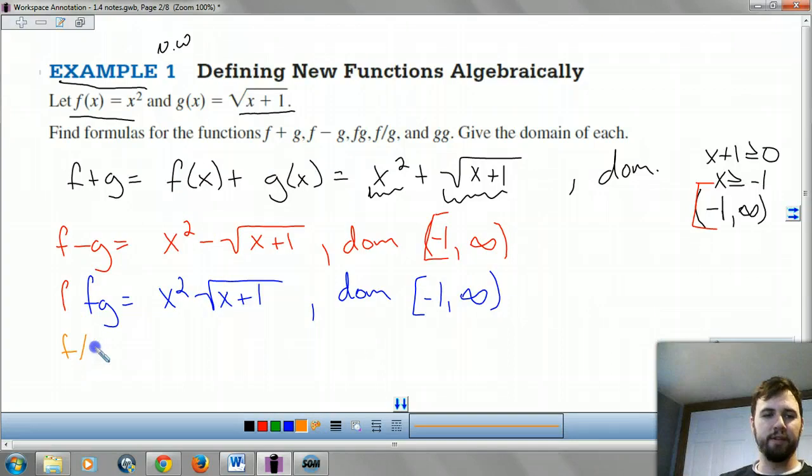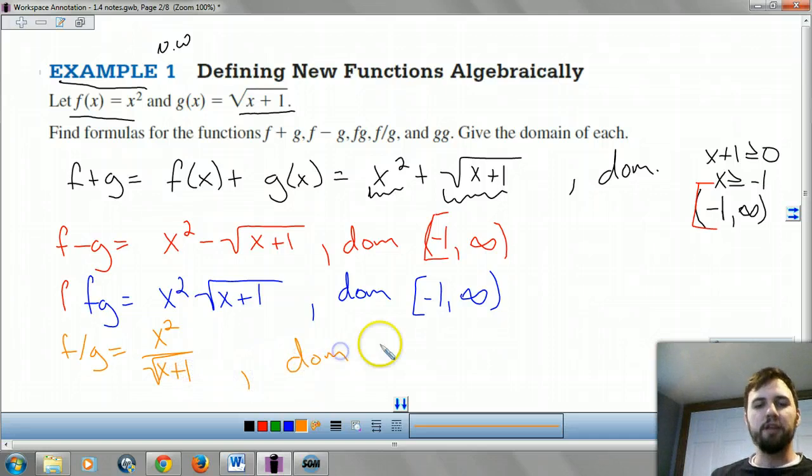Let's do f divided by g. Now we put our x squared over our square root of x plus 1. Now for our domain, the only thing that's going to change is we can't be 0, right? So x is going to be not greater than or equal to, just greater than negative 1. So we use parentheses.